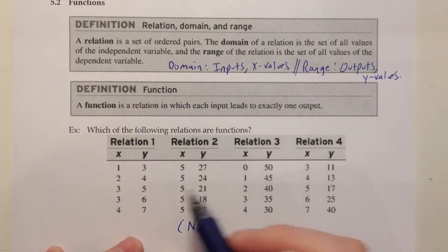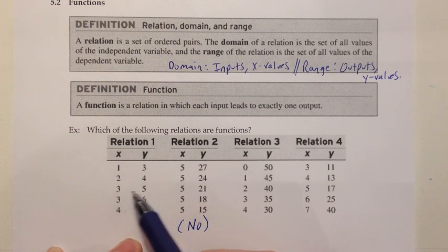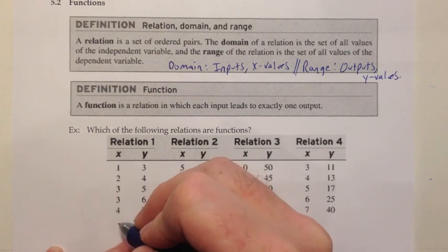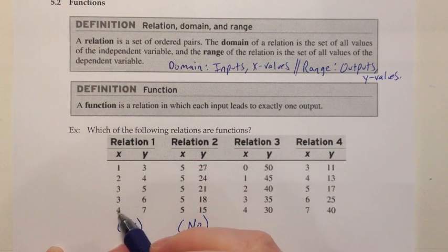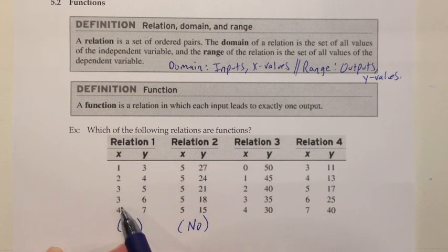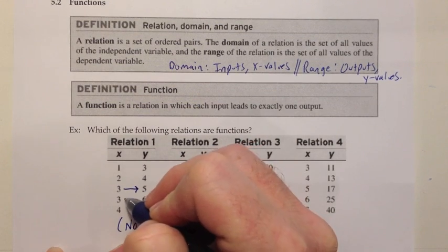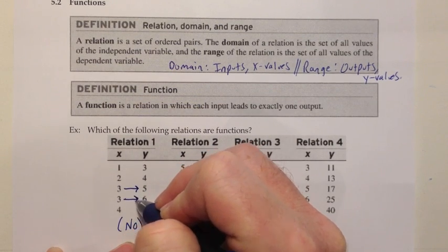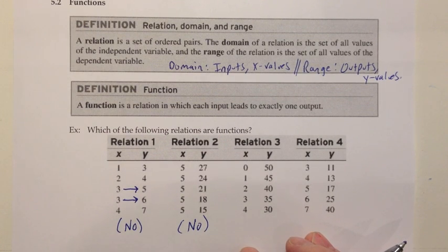How about this one? Where does 1 go? 3. Where does 2 go? 4. Where does 3 go? 5 — but also to 6. So this is going to be another no. It was looking good for a while: 1 goes to 3, 2 goes to 4, 4 goes to 7. But if I say where does 3 go, you could say this 3 goes to 5, and this 3 goes to 6. As soon as there's that uncertainty, it's not a function.